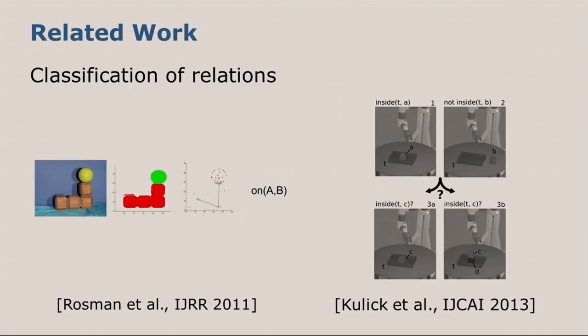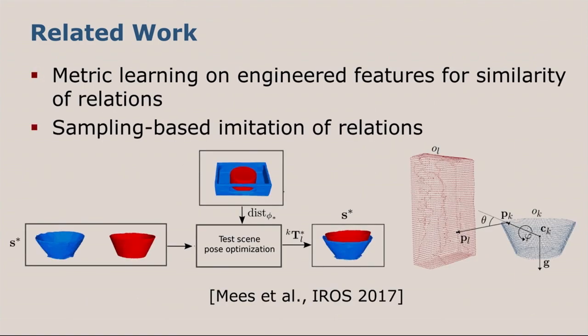So what has been done previously? There are a few works that pose this as a classification problem. For example, Rosman et al. and Kulik et al. both design features and then train a classifier on them. The problem here is that we need to learn a new model for each new relation. Whereas our approach, we learn one model that then captures a continuous spectrum of relations. This is closest to the work by Mees et al., and they were the first to propose to learn a continuous model for spatial relations in the form of a distance metric function.